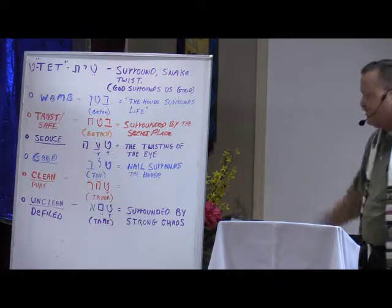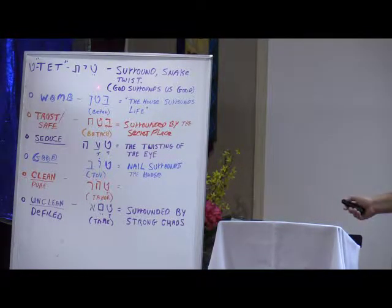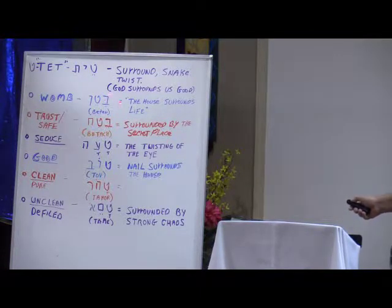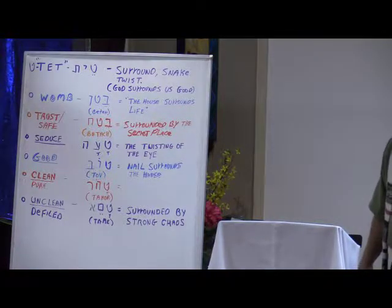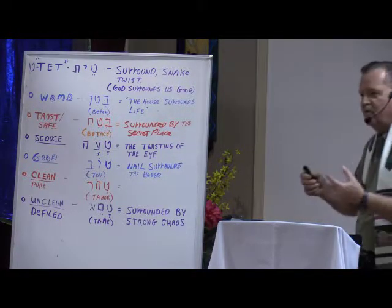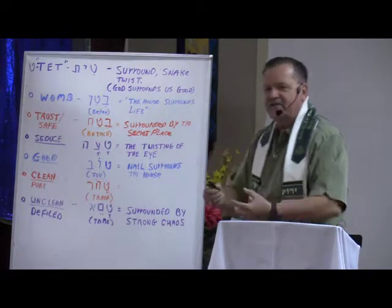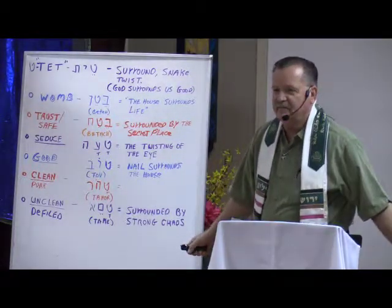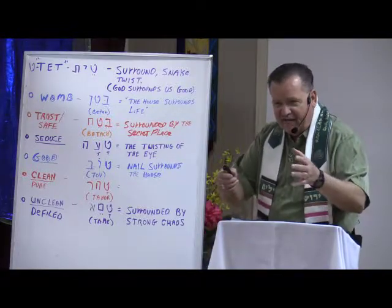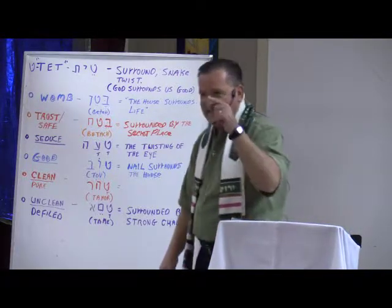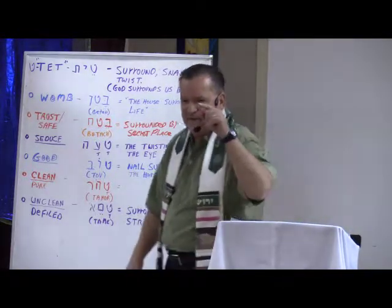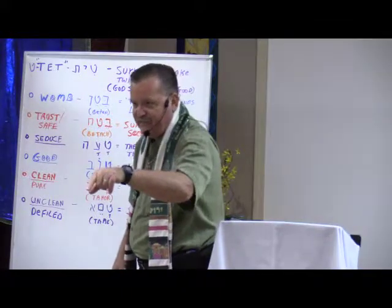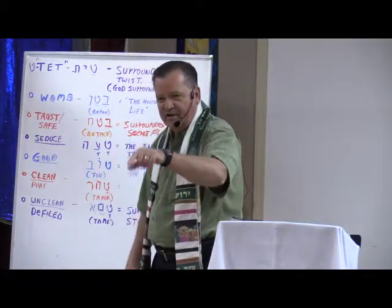We put the three word pictures together: house, to surround, and life. The womb actually means the house that surrounds life. God designed the womb in a woman as a house to surround the life. And where did the life come from? God put that life in the womb at the moment that conception happened. That's a human being. That's a life. And if you abort that, you're committing murder.